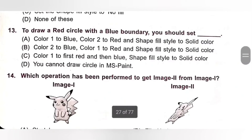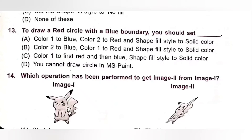Question 13: To draw a red circle with a blue boundary, you should set — A. Color 1 to blue, Color 2 to red, and shape fill style to solid color. B. Color 2 to blue, Color 1 to red, and shape fill style to solid color. C. Color 1 to first red then blue, shape fill style to solid color. D. You cannot draw a circle in MS Paint. Color 1 is for foreground and Color 2 is for background. Set Color 1 to blue, Color 2 to red, shape fill style to solid color. Option A is the correct answer.